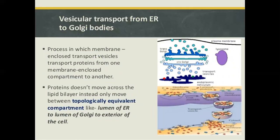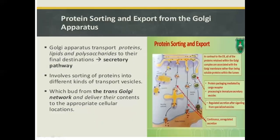Vesicular transport from endoplasmic reticulum to Golgi bodies is the process in which membrane-enclosed transport vesicles transport proteins from one membrane-enclosed compartment to another. Proteins do not move across the lipid bilayer; instead, they only move between topologically equivalent compartments, such as the lumen of the ER to the lumen of the Golgi to the exterior of the cell. Protein sorting and export from the Golgi apparatus involves sorting proteins into different kinds of transport vesicles that bud from the trans-Golgi network and deliver their content to the appropriate cellular location.